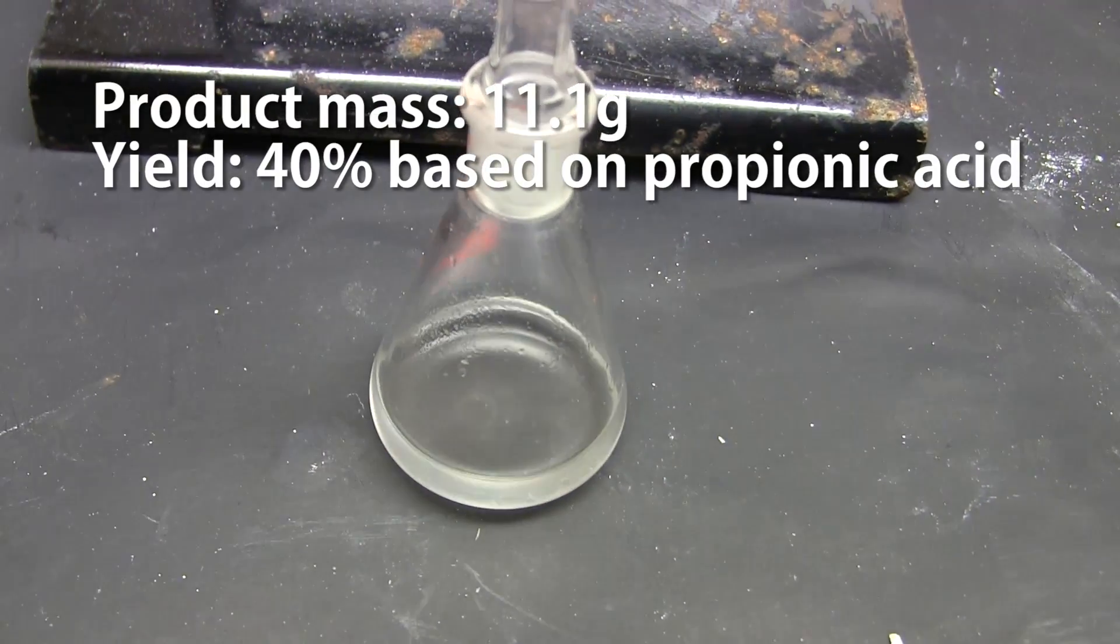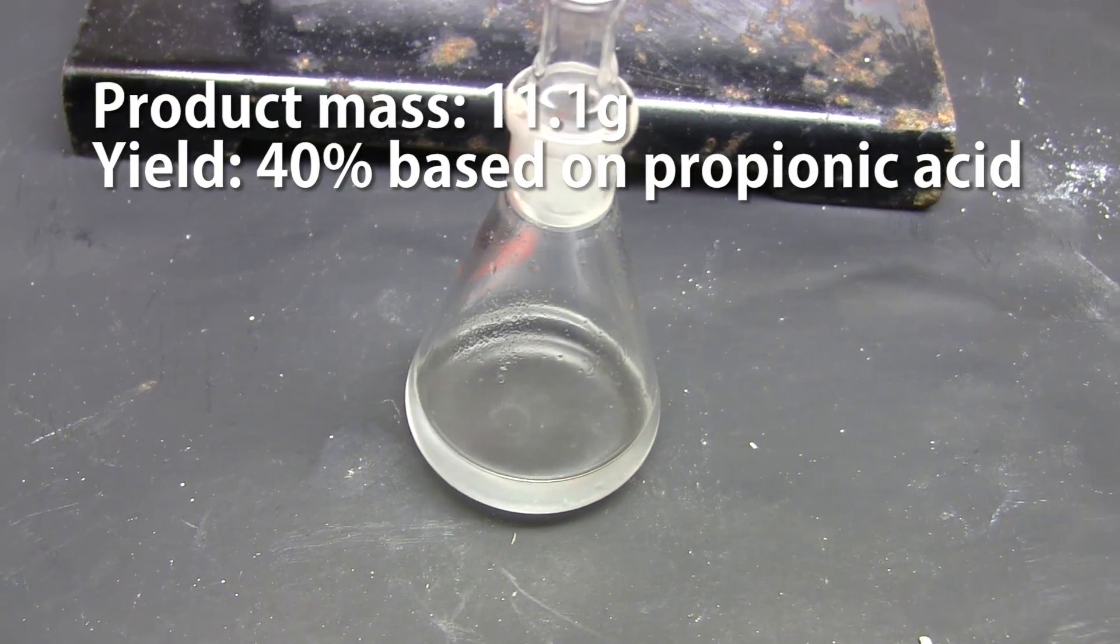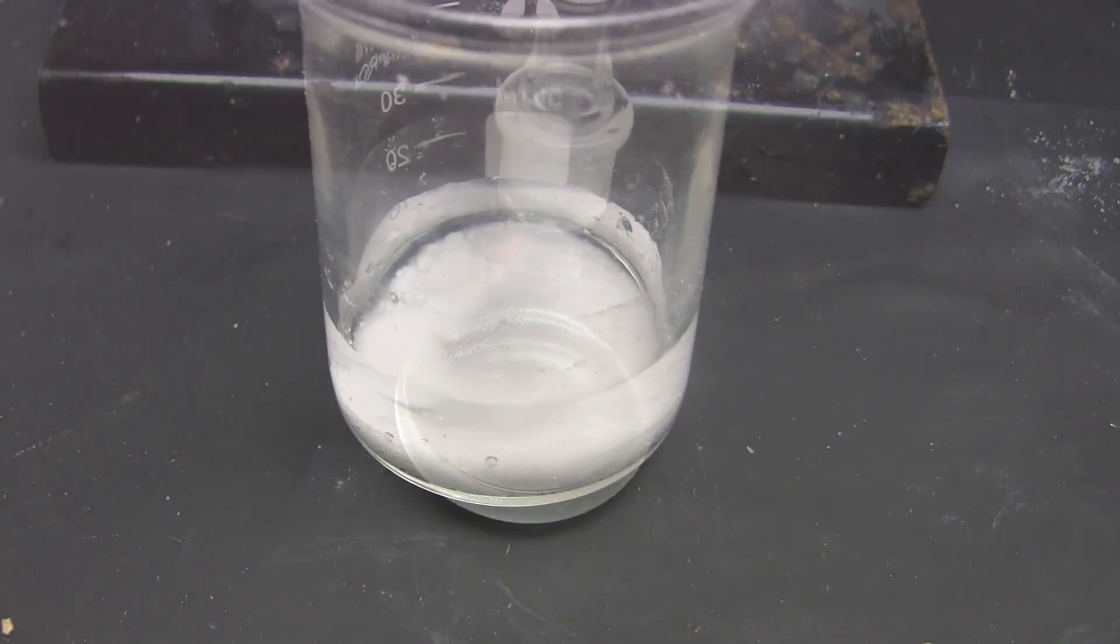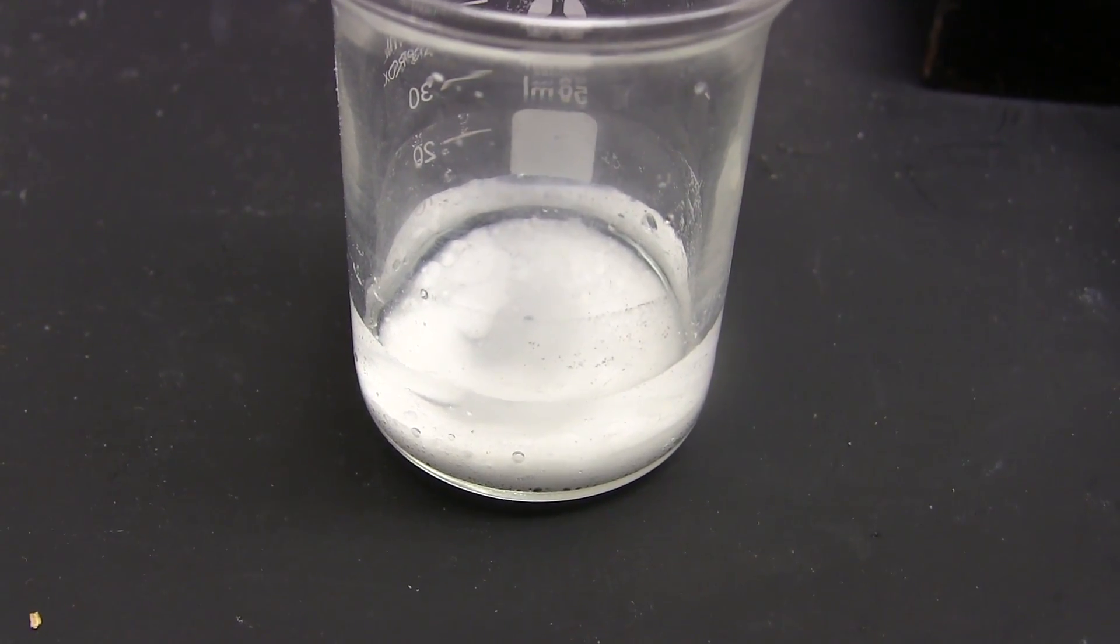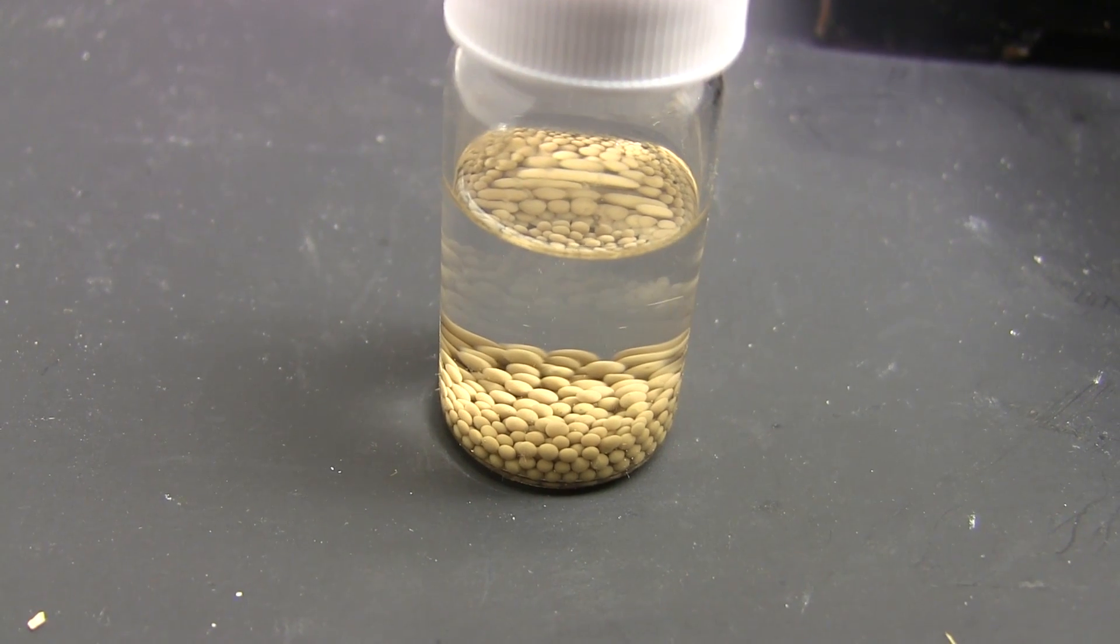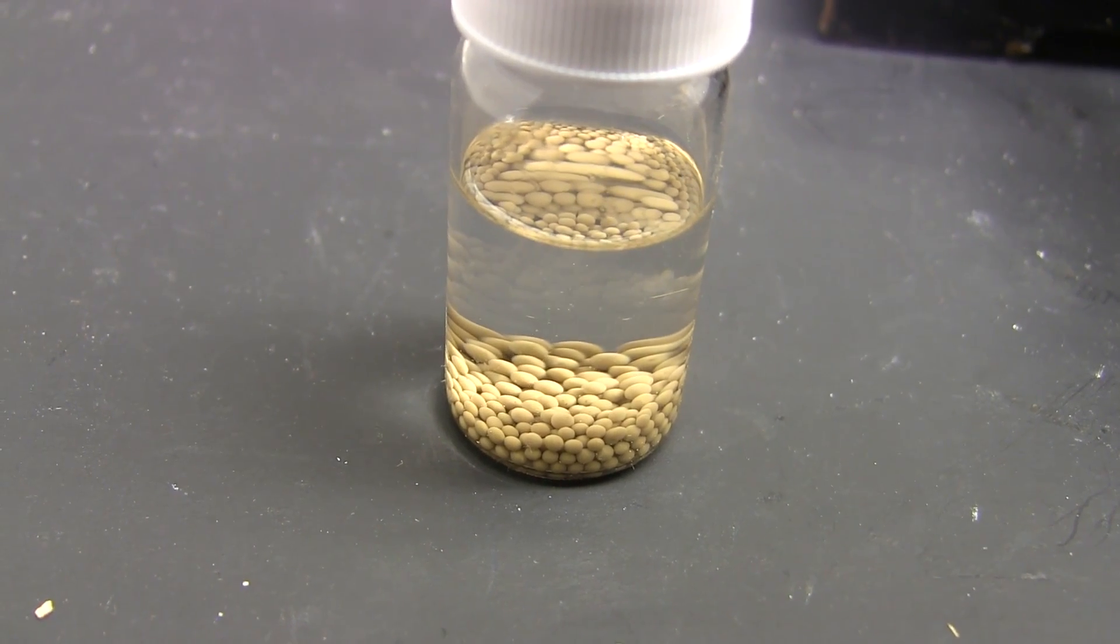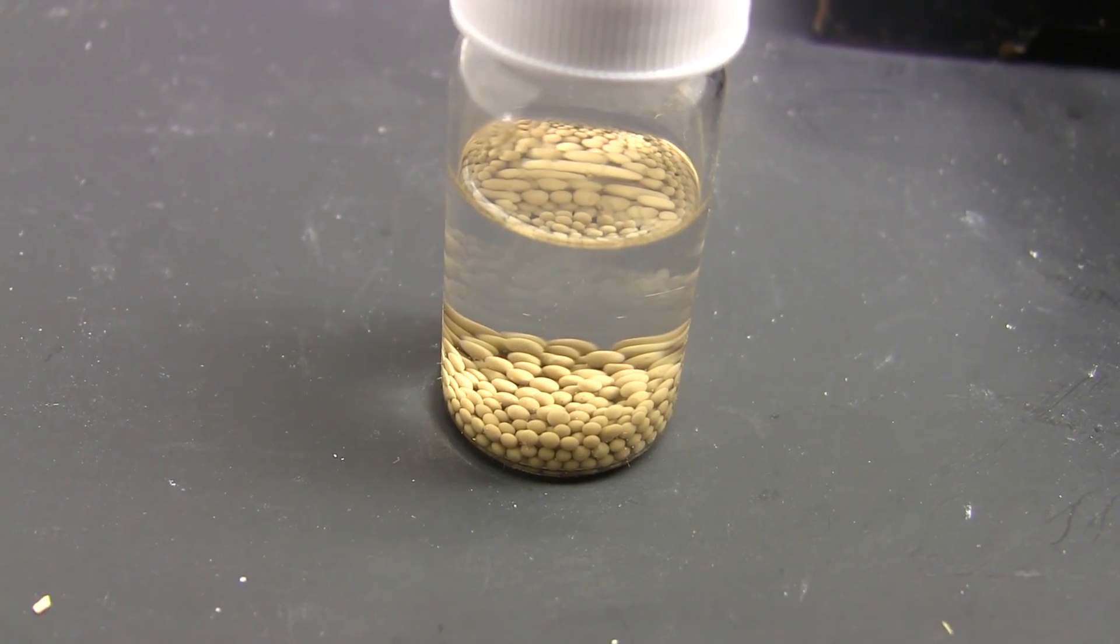The mass is about 11.1 grams so my raw yield was about 40%. For further purification we can dry it over some sodium sulfate and then fractionally distill, finally drying over molecular sieves. Now esters are known for their smells and this ethylpropionate is no exception. It has a rather sweet, fruity smell.